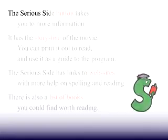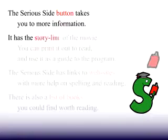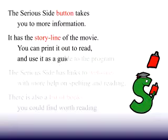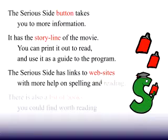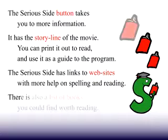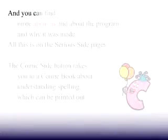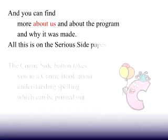The serious side button takes you to more information. It has the storyline of the movie — you can print it out to read and use it as a guide to the program. The serious side has links to websites with more help on spelling and reading, a list of books worth reading, and more about us and why the program was made.